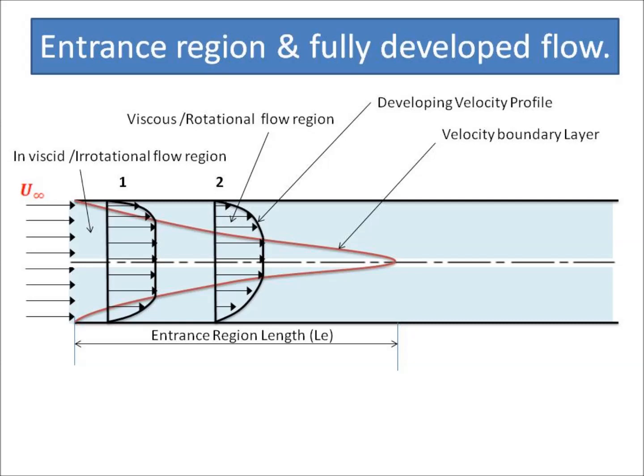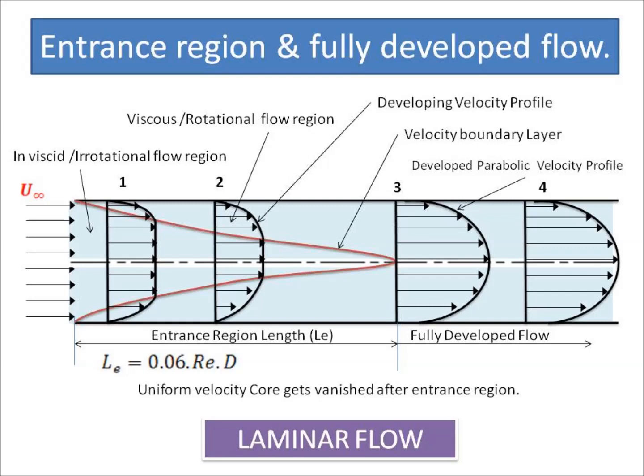This region is called the developing region because in the entrance region the velocity profile keeps changing at every section until it reaches the entrance length. After the entrance length is achieved, the variation in velocity profile is negligible. There are two types of fully developed velocity profiles: one for laminar flow and one for turbulent flow. For laminar flow, the Reynolds number is less than 2000 (some references use 2300). The entrance region length for laminar flow is a function of Reynolds number and diameter. After the entrance length, only viscous flow exists — no non-viscous flow.